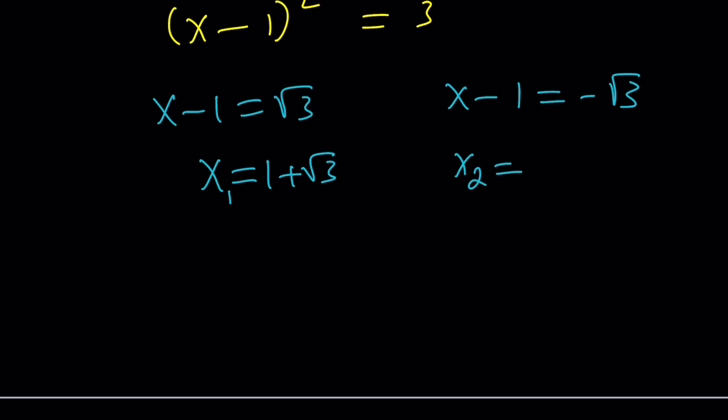And the x values from here is going to be x equals 1 plus root 3, and x sub 2 is 1 minus root 3. Notice that 1 minus root 3 is less than 0 and our expression is supposed to be positive. So, I'm going to go with 1 plus root 3.